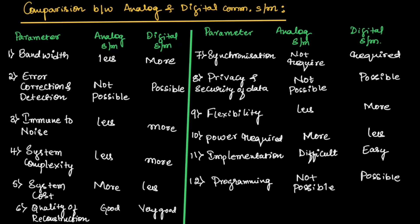This is about the comparison between analog systems and digital communication systems. Hope you have understood the topic. Thank you.